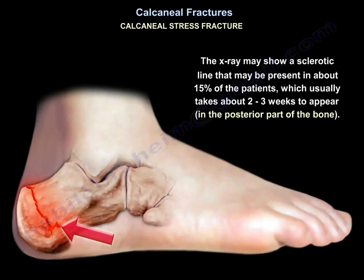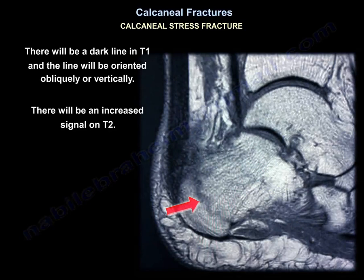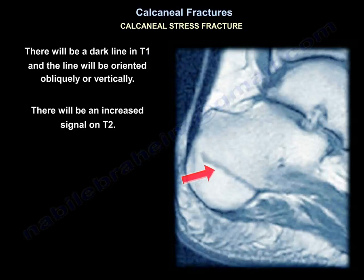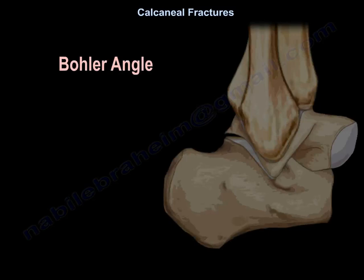The X-ray may show a sclerotic line, present in about 15% of patients, and it usually takes about two to three weeks to appear — typically in the posterior part of the bone. MRI will help in early diagnosis if the X-ray is negative. There will be a dark line on T1, oriented obliquely or vertically, and increased signal on T2. Treatment: rest, avoid or restrict weight bearing, and do physiotherapy.